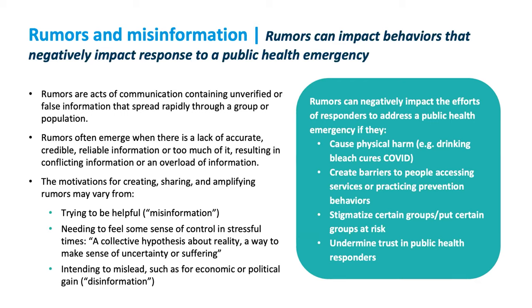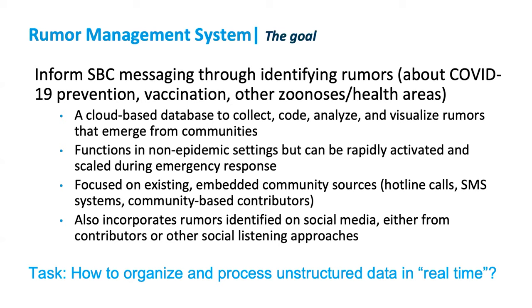There are also times when rumors are true — for example, rumors that humanitarian aid workers were abusing the people they were supposed to be serving have sometimes proven accurate, making the so-called rumor a signal of something urgently needing investigation. The goal of a rumor management system is to systematize rumors that rapidly emerge in communities, so that awareness of them can inform social behavior change interventions — and on occasion, follow up on actual situations. CCP systems capture rumors about COVID-19, zoonotic diseases, HIV, or family planning.